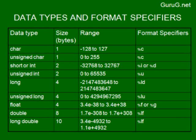Float is capable of storing real or decimal values and has a size of 4 bytes, using %f or %g as format specifier — most frequently %f. Double has a size of 8 bytes and long double has a size of 10 bytes. Both use %lf as their format specifier. These are the data types, format specifiers, and their ranges.